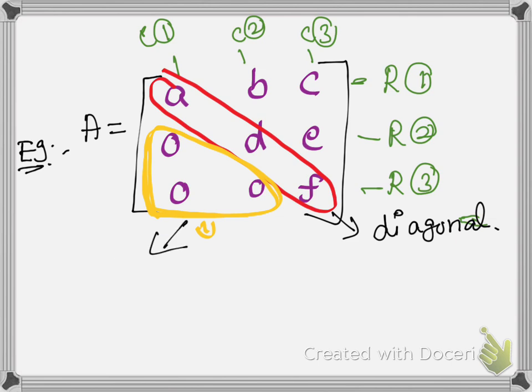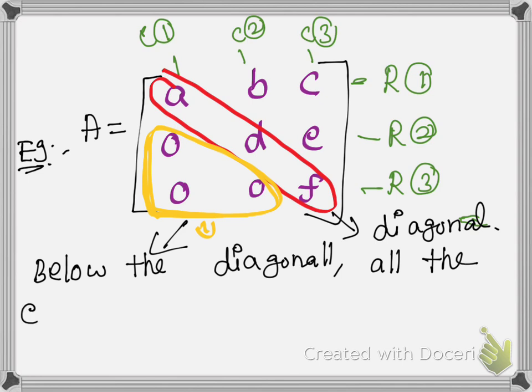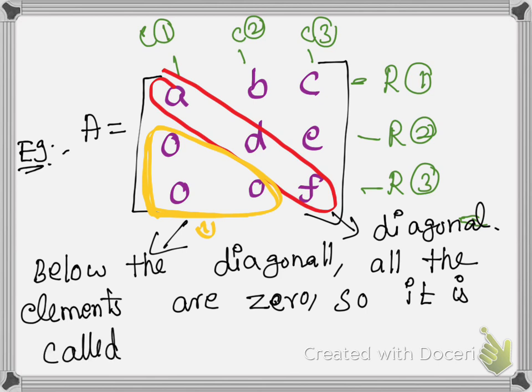Here below the diagonal, all the elements are 0. So it is called an upper triangular matrix.